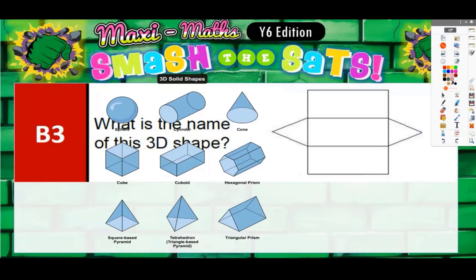Question three: What is the name of this 3D shape? We've basically got a net here, which is a 3D shape laid flat. The net consists of two triangles - a triangle there and a triangle there - and three rectangles.